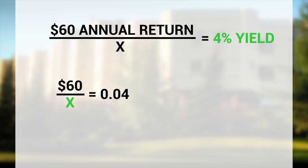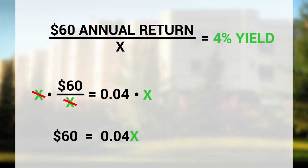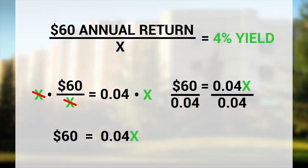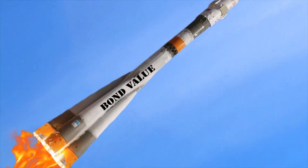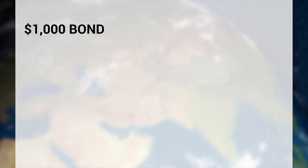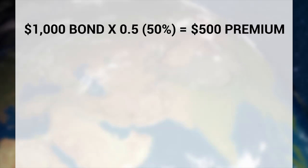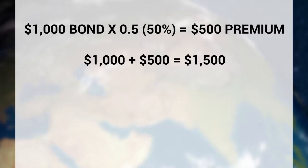60 over X must now equal 4%. We multiply both sides by X to get it out of the denominator, and you have 60 equals 0.04X. Then you divide both sides by 0.04, and 60 over 0.04 is 1,500. So yes — in that short window of one year when interest rates fell from 6% to 4%, your bond's value skyrocketed like a Manhattan Batman building, from a grand up 50% to $1,500.